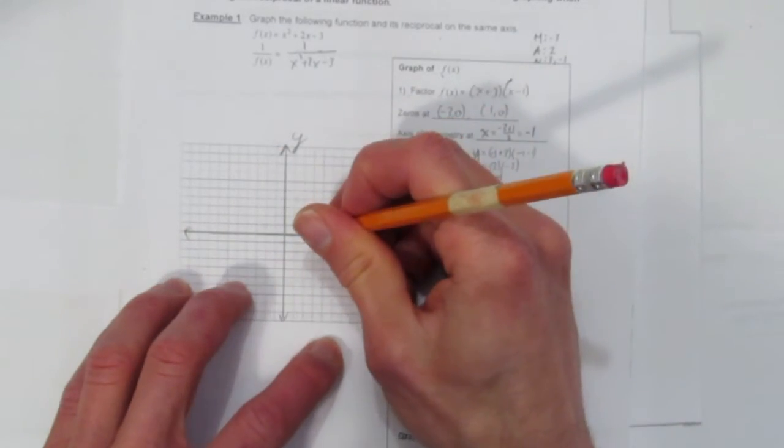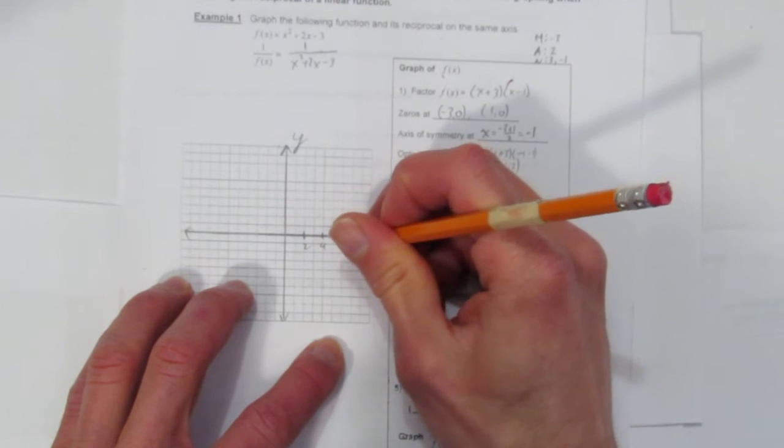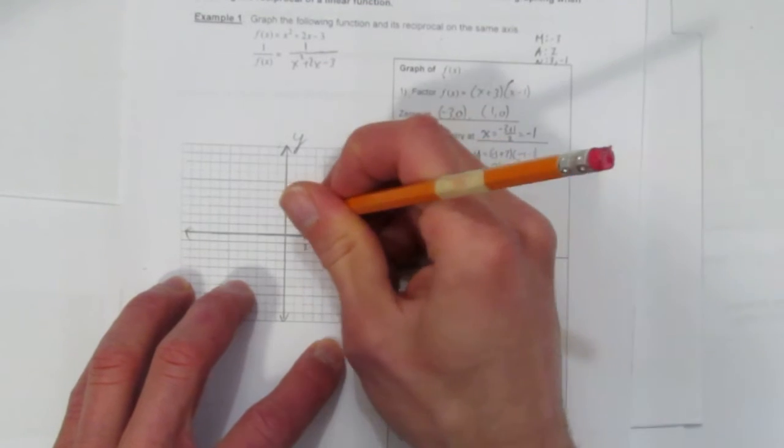Don't forget a nice even scale. Let's go to - you can go up by 2. Just make sure you label every second tick at least.